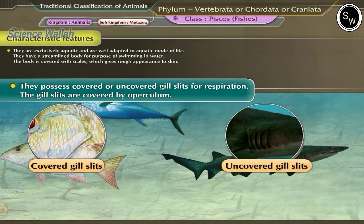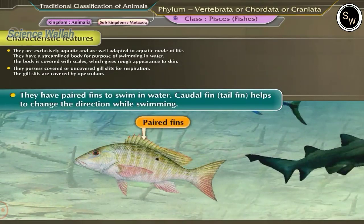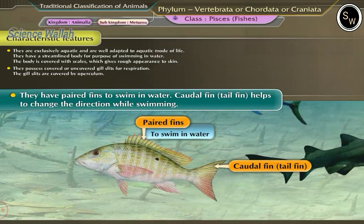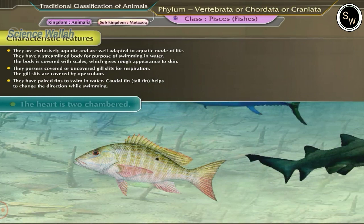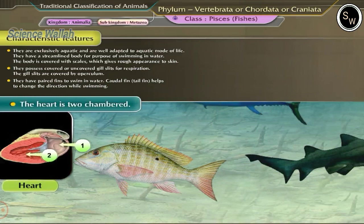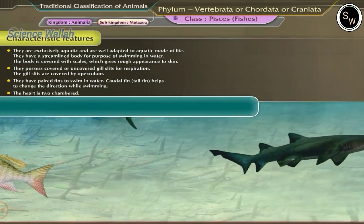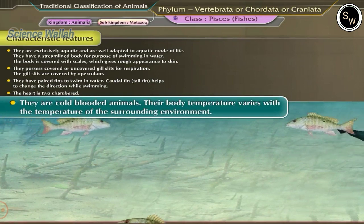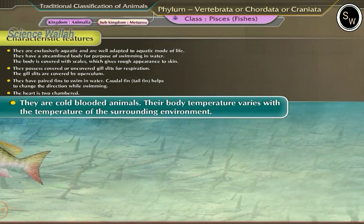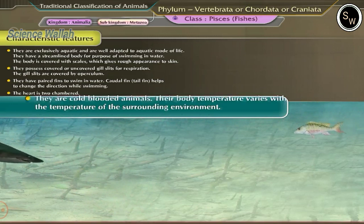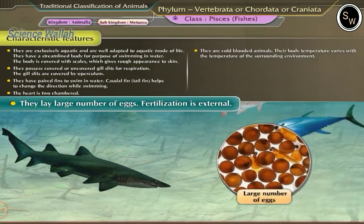The gill slits are covered by an operculum. They have paired fins to swim in water. The caudal fin, or tail fin, helps to change direction while swimming. The heart is two-chambered. They are cold-blooded animals, meaning body temperature varies with the temperature of the surrounding environment.